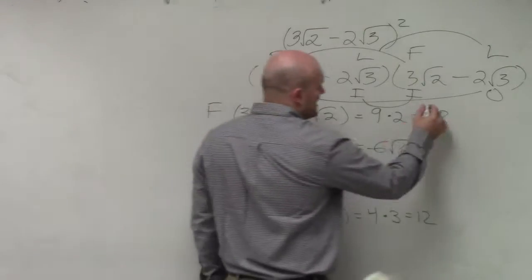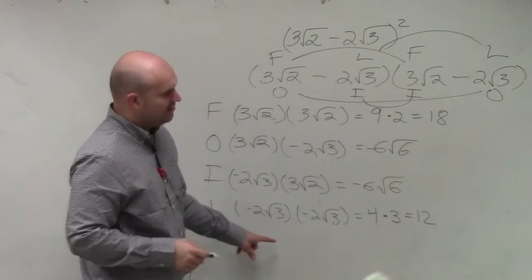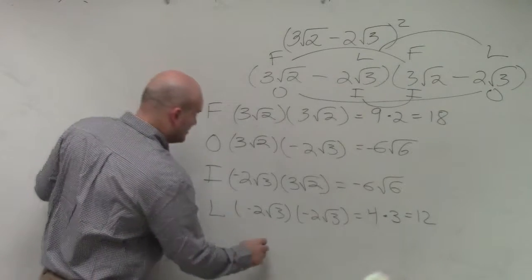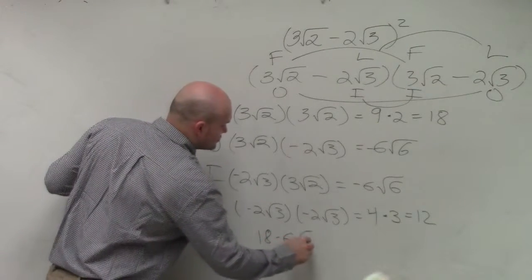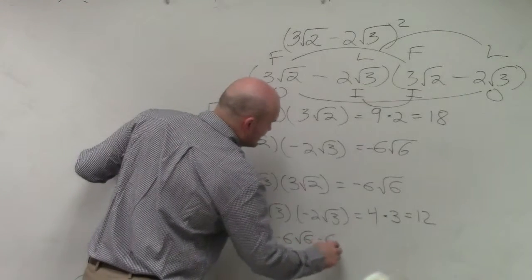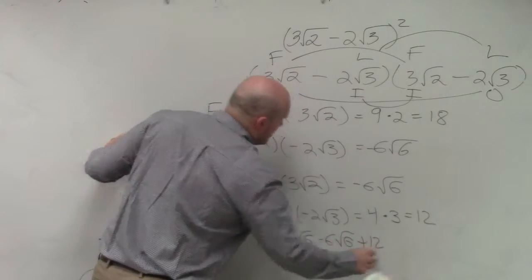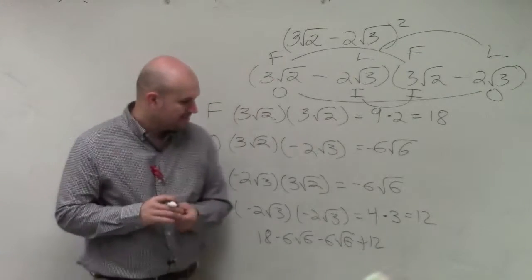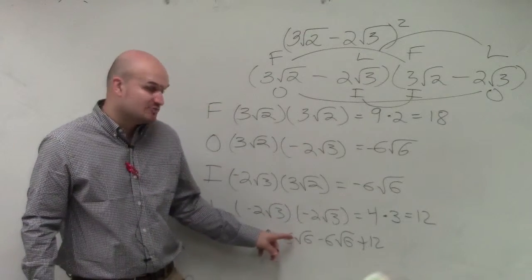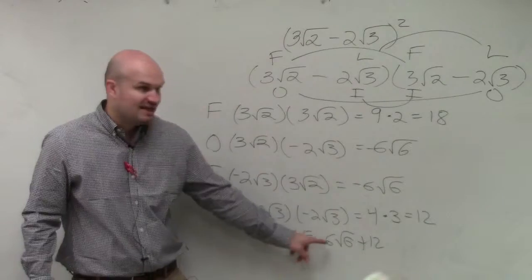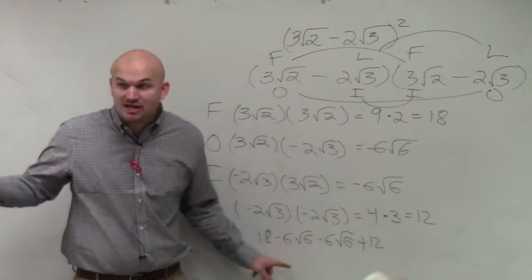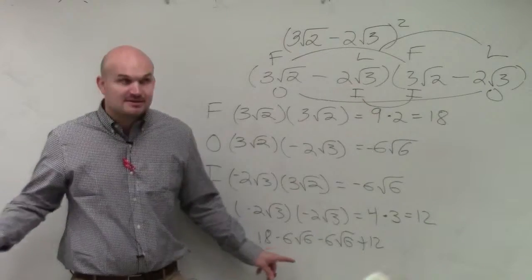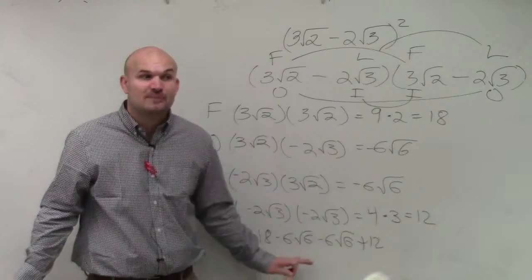Now, these are my answers. So I'm going to write them out as one expression. So 18 minus 6 square root of 6 minus 6 square root of 6 plus 12. Now, first of all, let's just make sure we can subtract these. Can I subtract negative 6 square root of 6 from 6 square root of 6? Do we have the index and the radicand are exactly the same? Yes. So guess what? We can apply this operation.